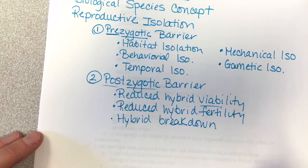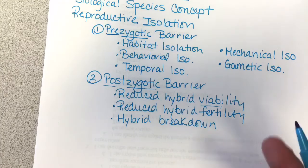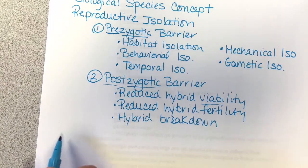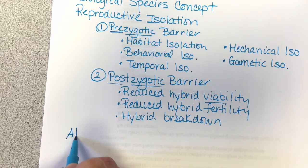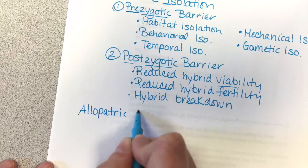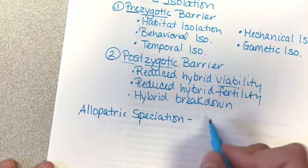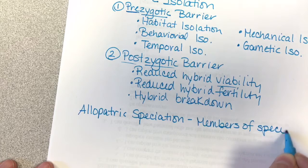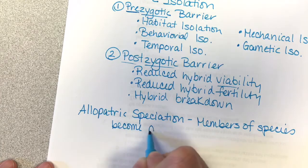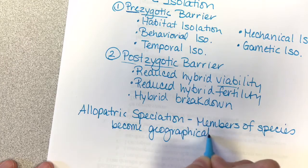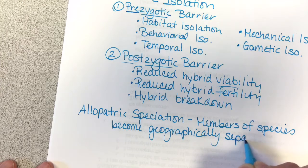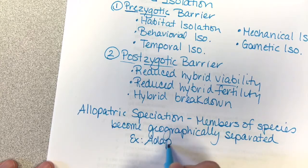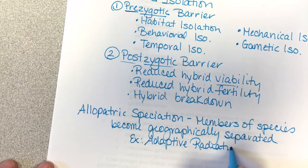When speciation does happen, we cross these barriers. There are two kinds of speciation. The first is allopatric speciation, where members of a species become geographically separated and evolve differently. Adaptive radiation would be an example of that.